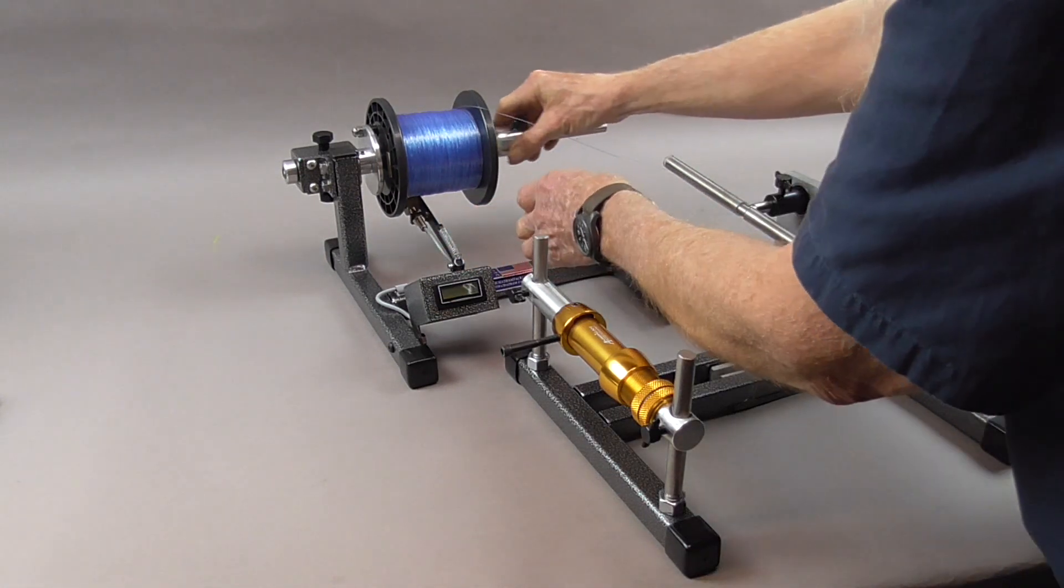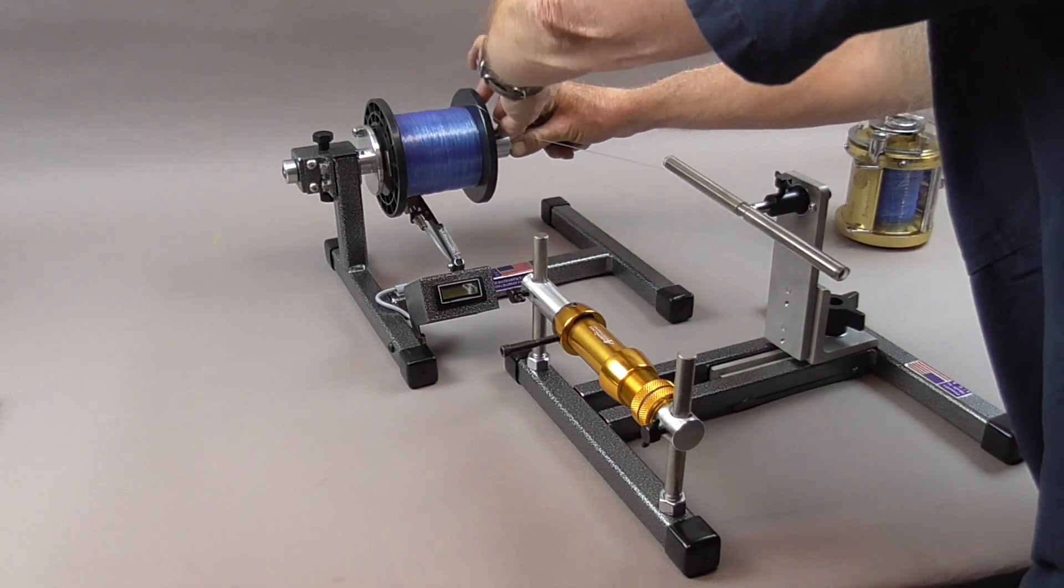Slide it on there, engage it in the hub there. Put the cone on, tighten that down.